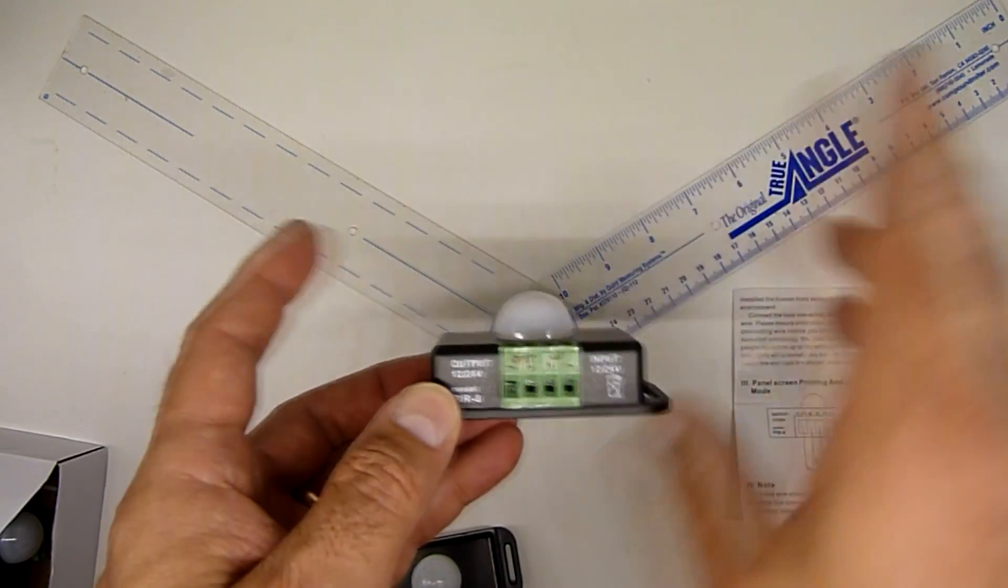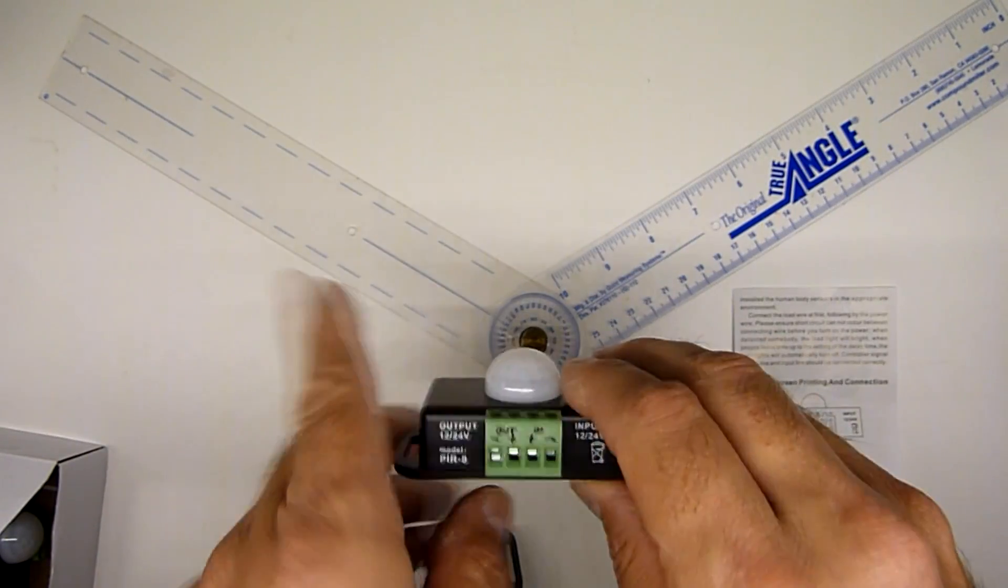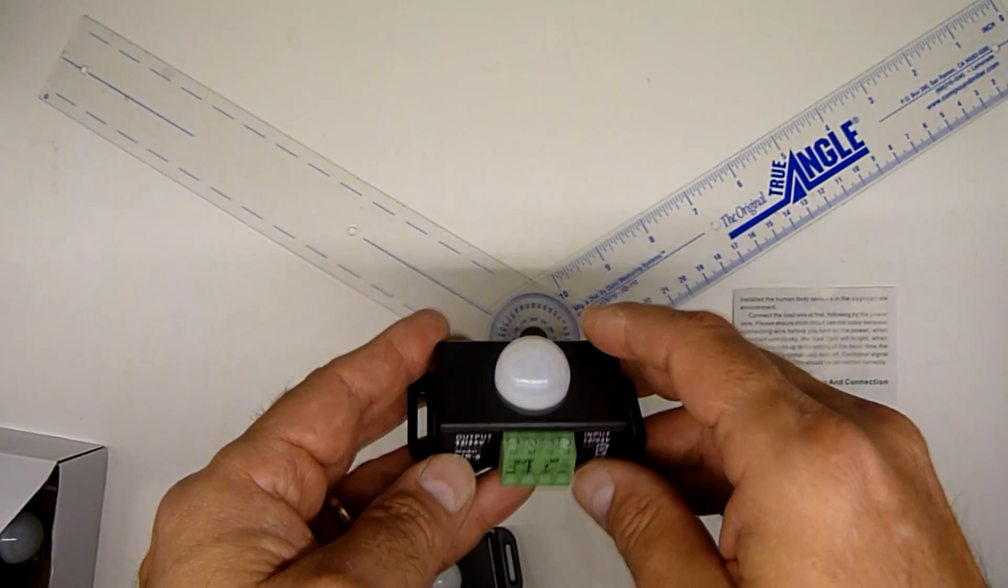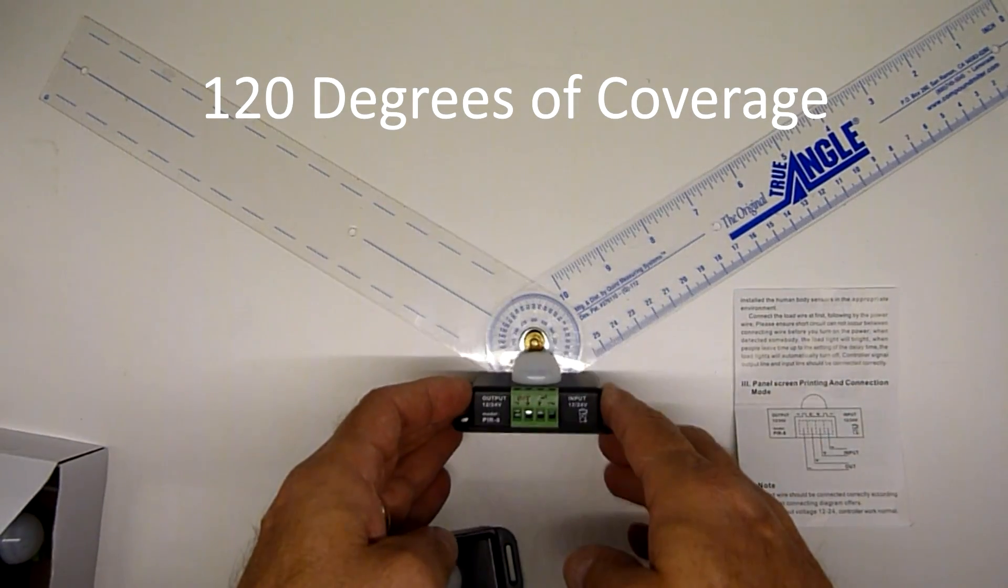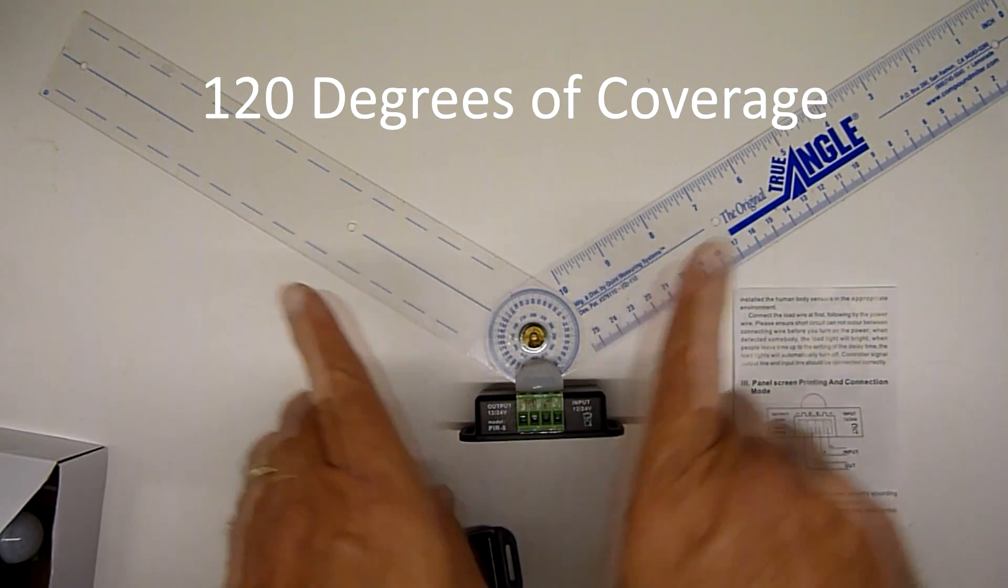So when it's got clear coverage, it works great. And again, I have two of these in the kitchen and they work fine there. It has 120 degrees of coverage, so that would be about the coverage angle you get.